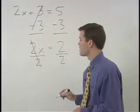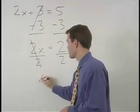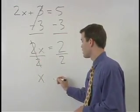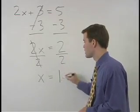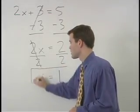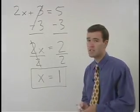On the left, the 2's cancel and we're left with x. On the right, 2 over 2 simplifies to 1. So our answer is x equals 1.